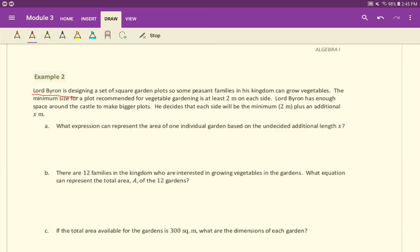Lord Byron is designing a set of square garden plots so some peasant families in his kingdom can grow vegetables. The minimum size for a plot recommended for vegetable gardening is at least 2 meters on each side. Lord Byron has enough space around the castle to make bigger plots. He decides that each side will be the minimum 2 meters plus an additional x meters.